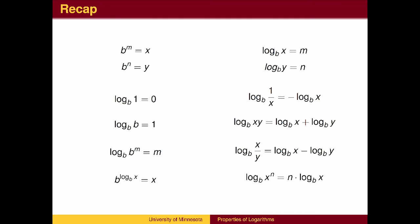To recap, recall that logs are exponents. Zero is the exponent you put on anything to get 1. An exponent of 1 leaves the base the same. Exponents and logarithms are inverses, so they undo each other.